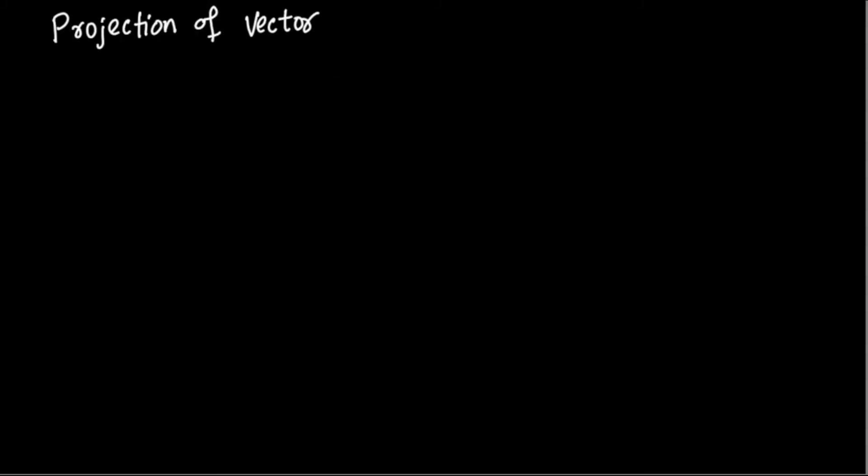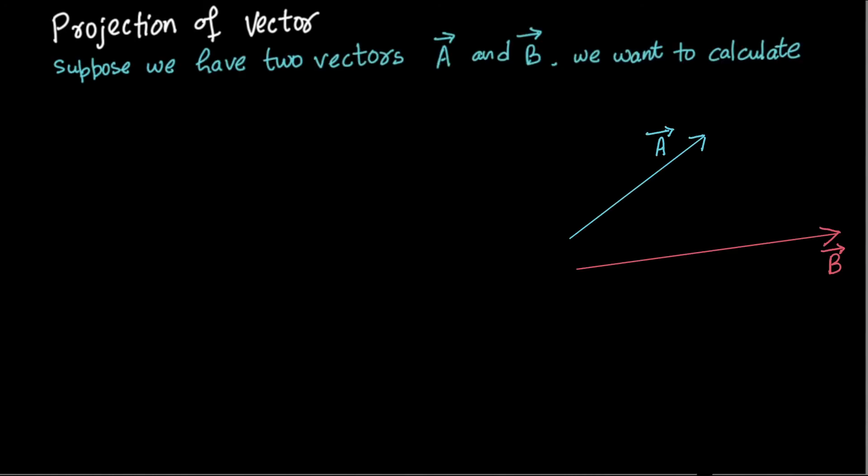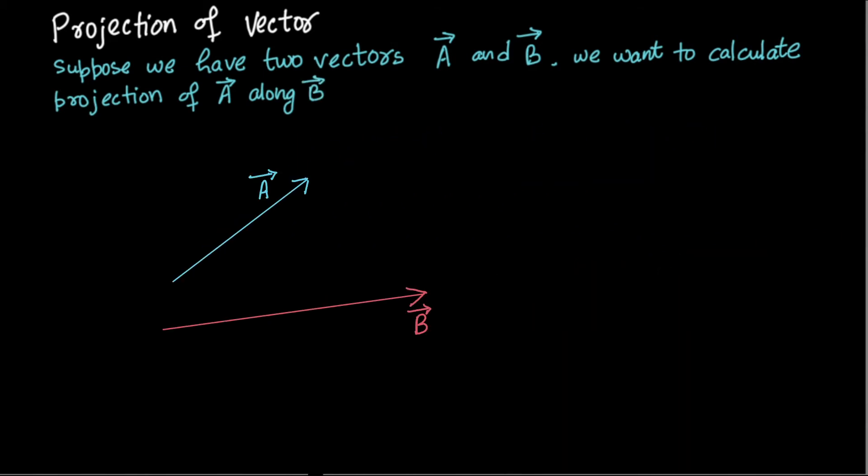Now we will discuss projection of vectors. Let's say we have two vectors, a and b. We want to calculate the projection of vector a along vector b. The angle between these two vectors is theta. Put the light above, not randomly, but in such a way that rays are coming perpendicular to the vector b. Then the shadow of vector a will form on vector b.